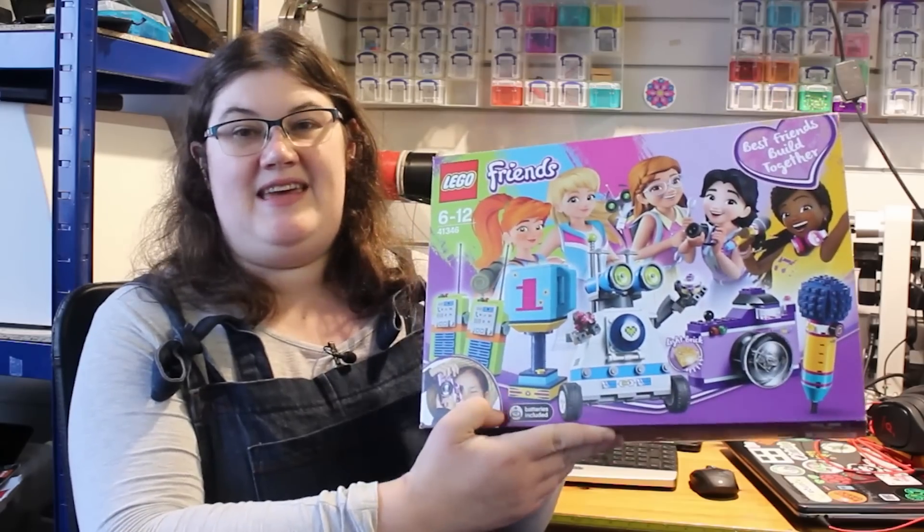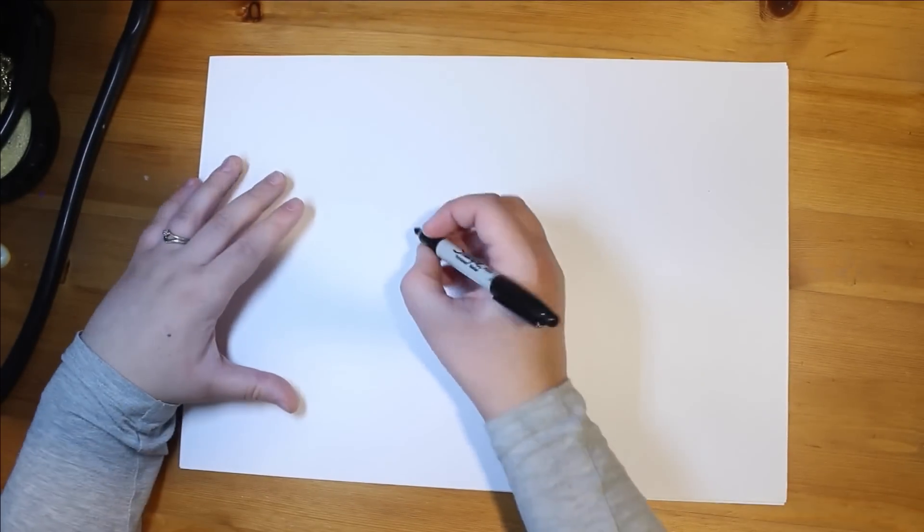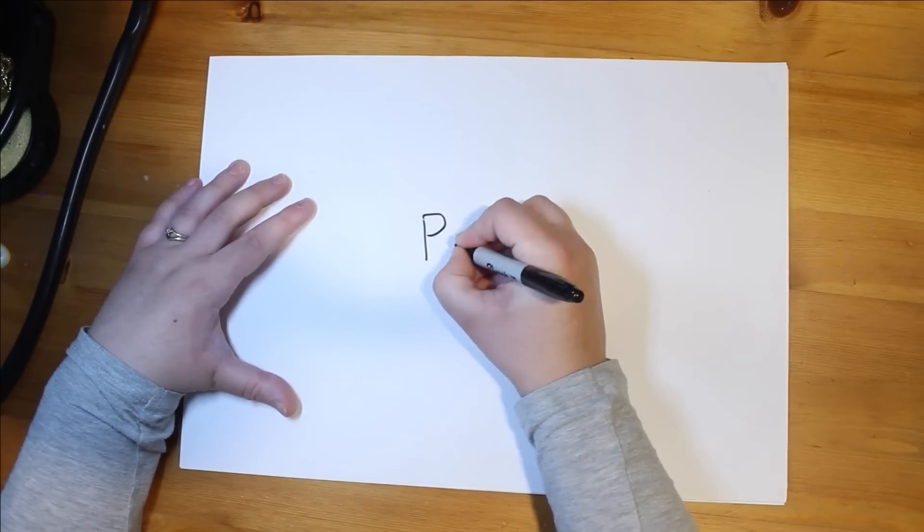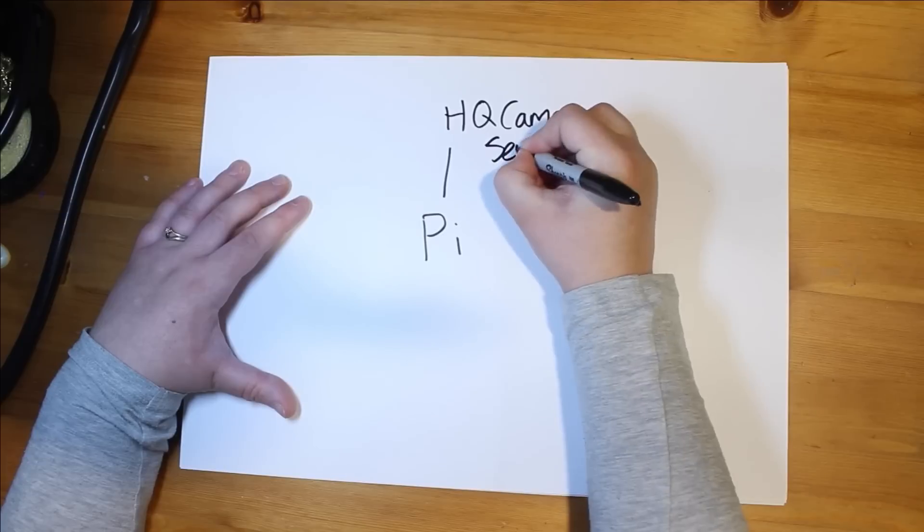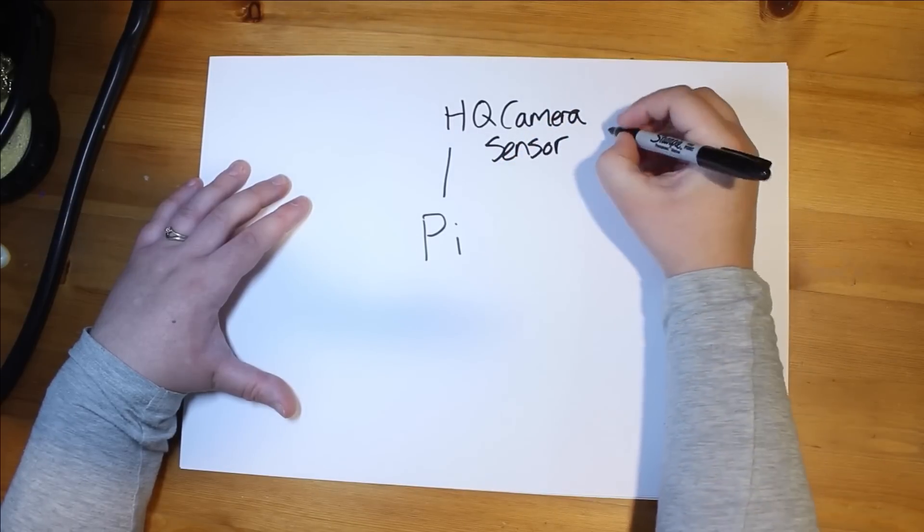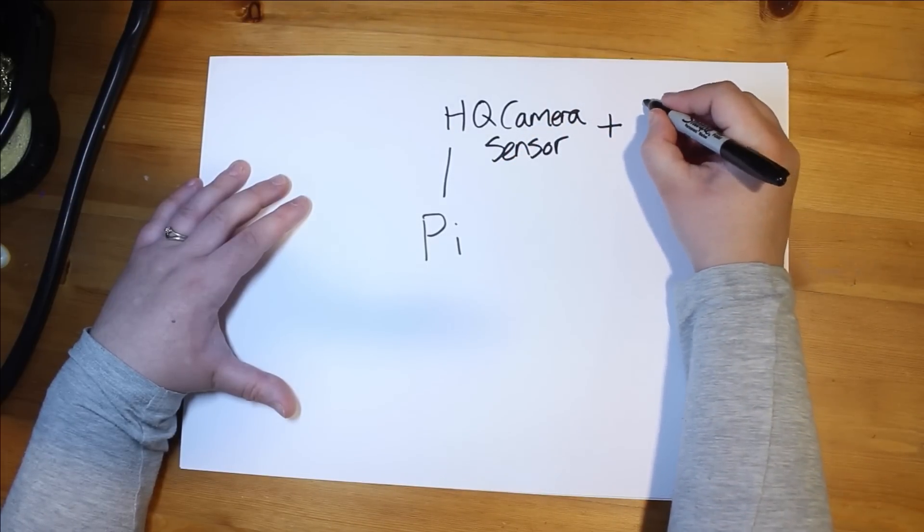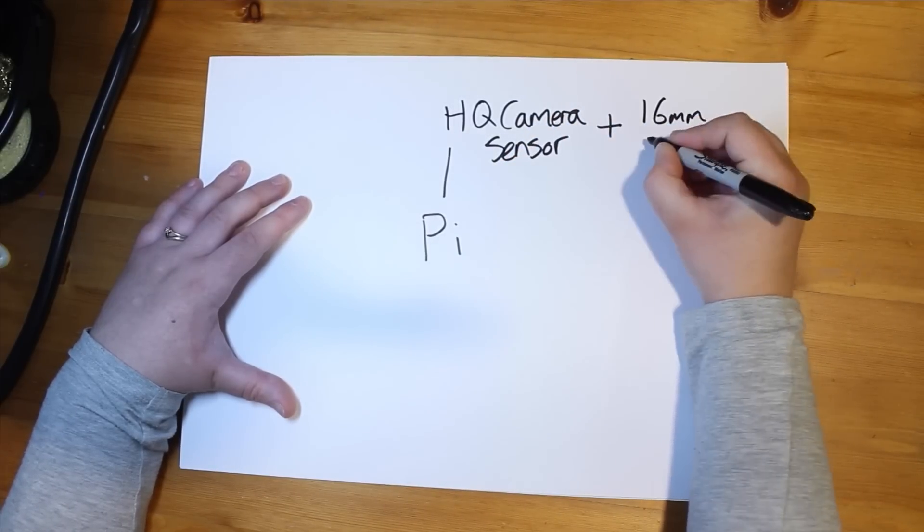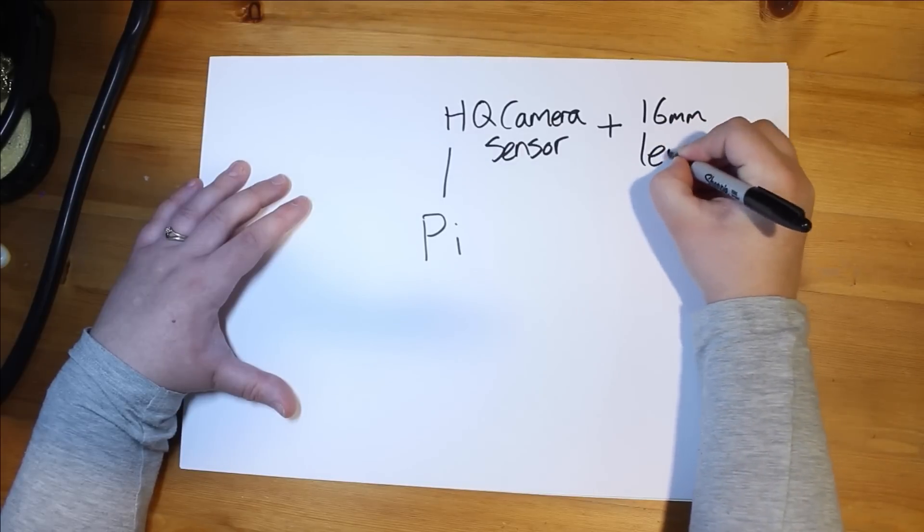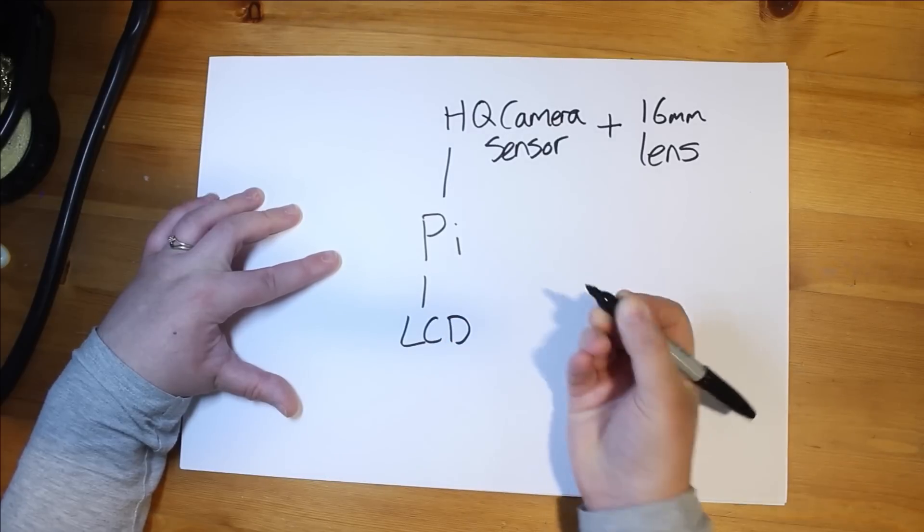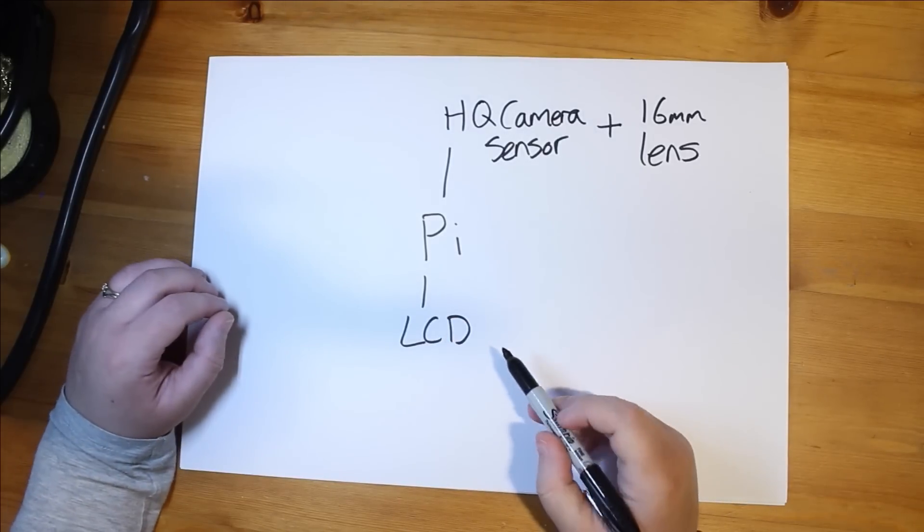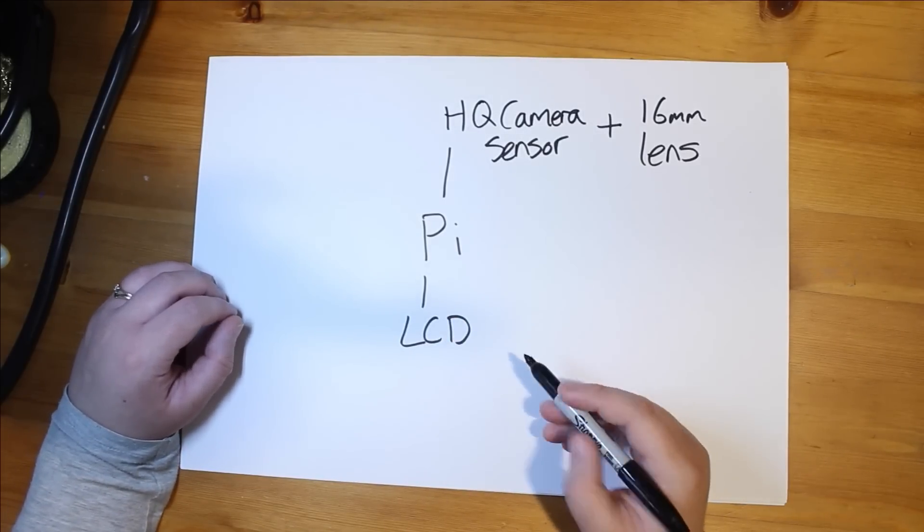So we're going to see if we can make it real. For this project, we're going to use a Raspberry Pi. Connected to that, we're going to use the new high quality camera sensor, along with the 16mm telephoto lens. Then we're also going to want an LCD, so we can have a look at the preview of our picture from the Pi.